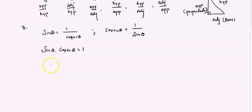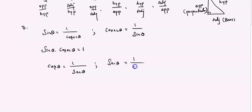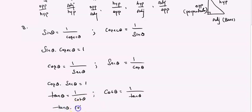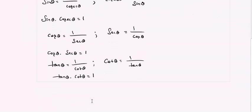The next reciprocal is cos theta. Cos theta can be written as 1 by secant theta. Similarly, secant theta equals 1 by cos theta. Cross multiplying gives cos theta into secant theta equals 1. Similarly, tan theta equals 1 by cot theta and cot theta equals 1 by tan theta, so tan theta into cot theta equals 1.